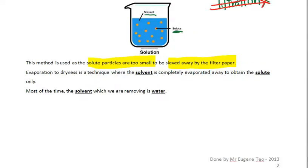So how do we do it? What we're going to do is just to get rid of all the solvent. We're just going to get rid of the solvent, and what we're going to leave is the solute, which is the solid particles. And most of the time, the solvent which we're removing is water, which has a boiling point of 100 degrees Celsius.